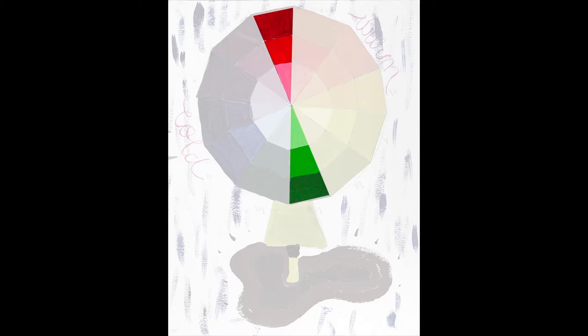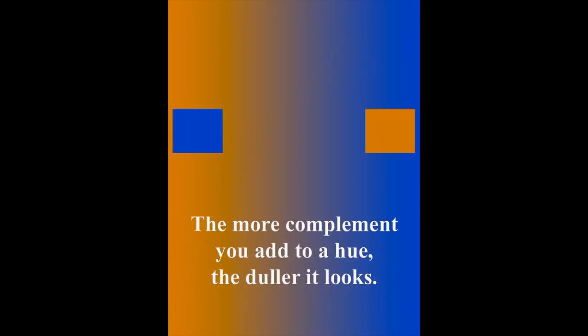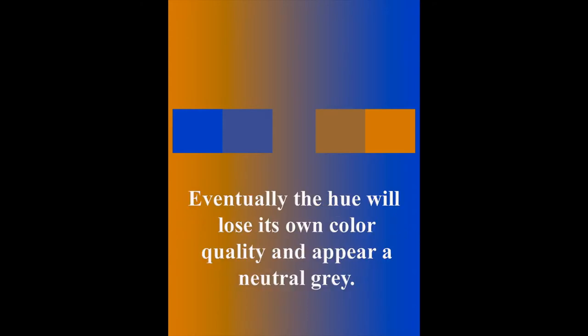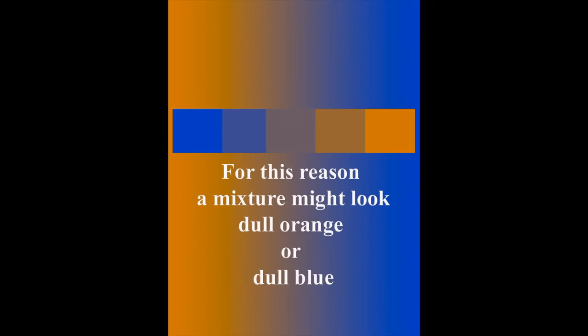On the edge where complementary colors meet, mixing a hue with its complement dulls the hue or lowers its intensity. The more complement you add to a hue, the duller the hue looks. Eventually, the hue will lose its own color quality and appear neutral gray.